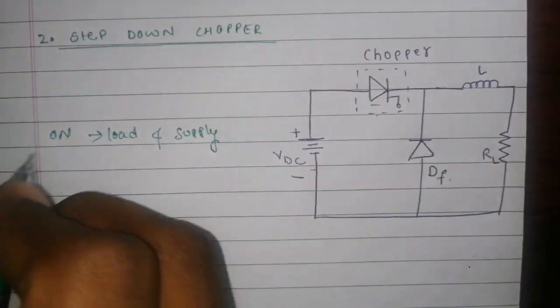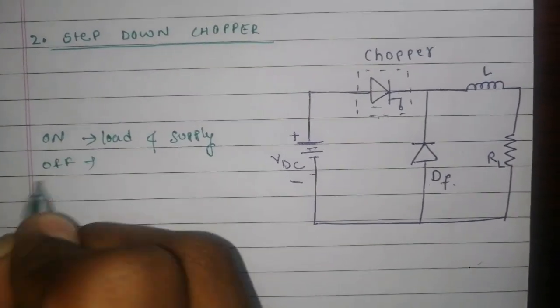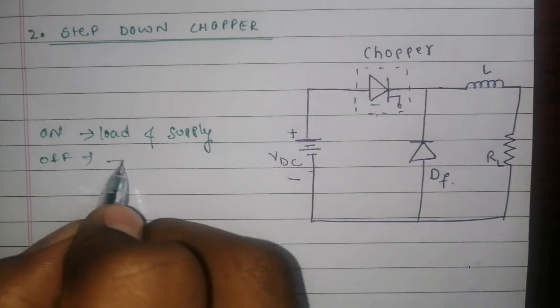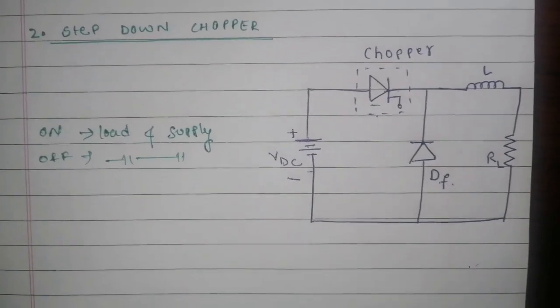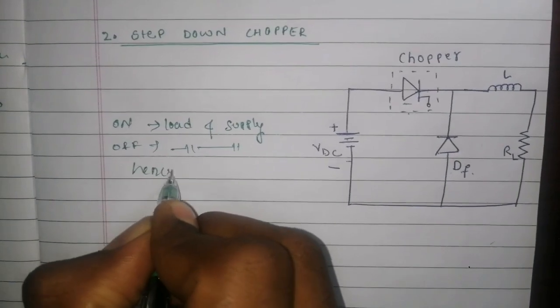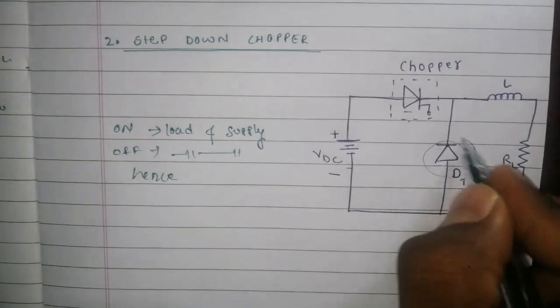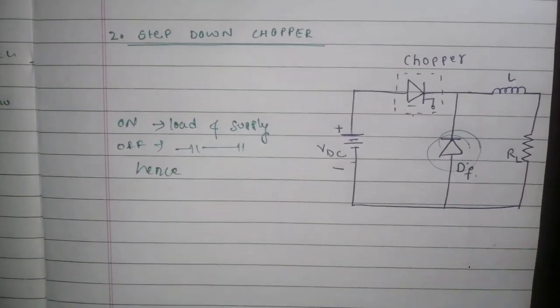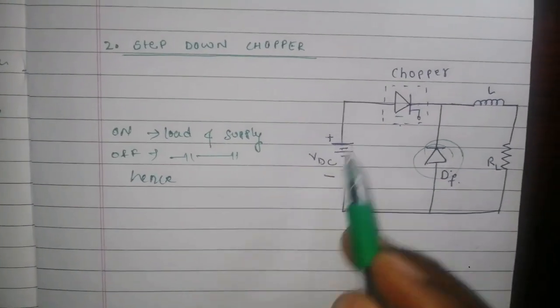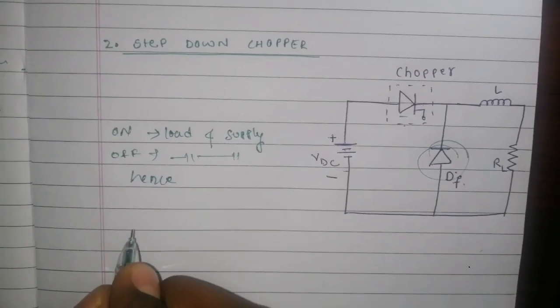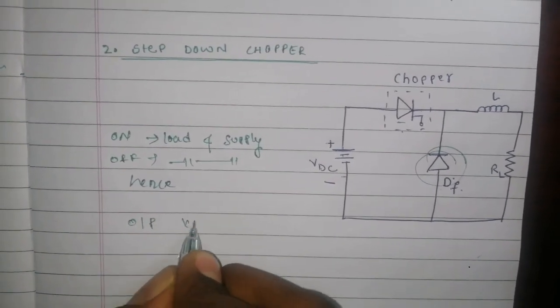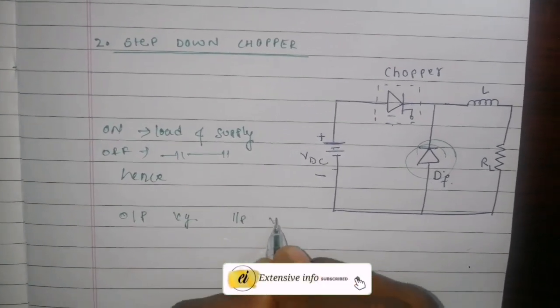When this chopper is off, it removes the connection of load and supply. Hence, the load current flows through this freewheeling diode. This type of chopper produces output voltage which is less than the input voltage.